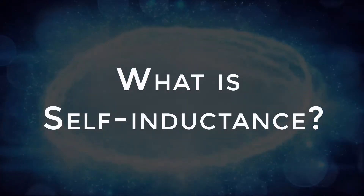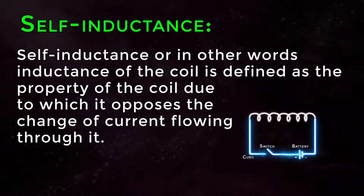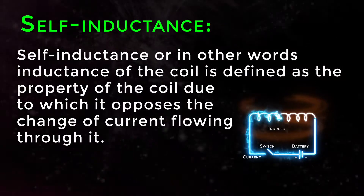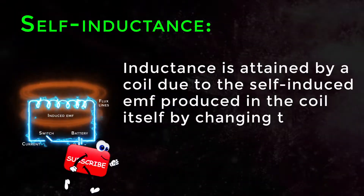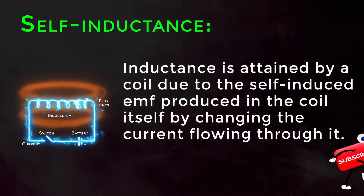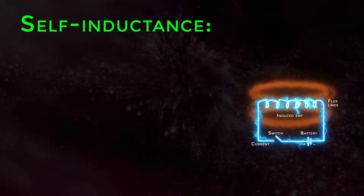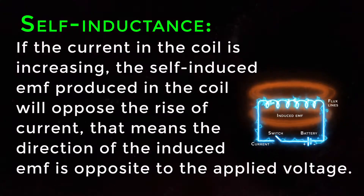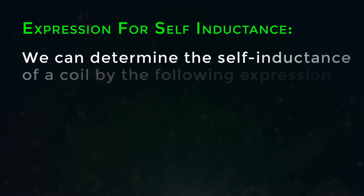Self-inductance, or the inductance of a coil, is defined as the property of the coil due to which it opposes the change of current flowing through it. Inductance is attained by a coil due to the self-induced EMF produced in the coil itself by changing the current flowing through it. If the current in the coil is increased, the self-induced EMF will oppose the rise of current — meaning the direction of the induced EMF is opposite to the applied voltage.